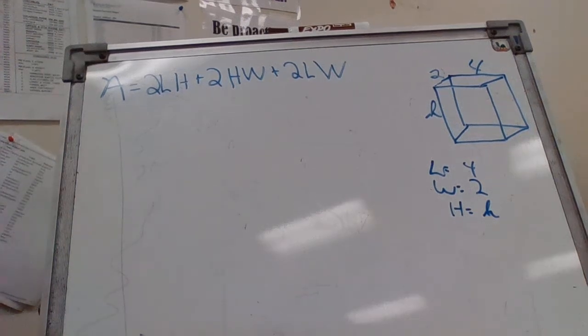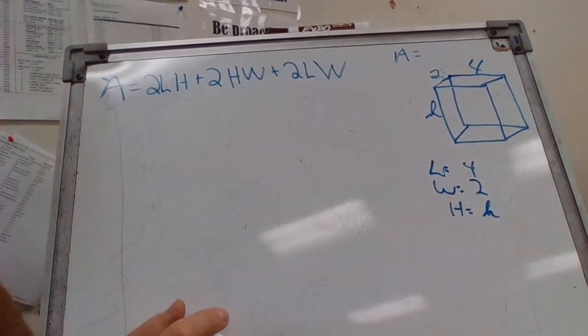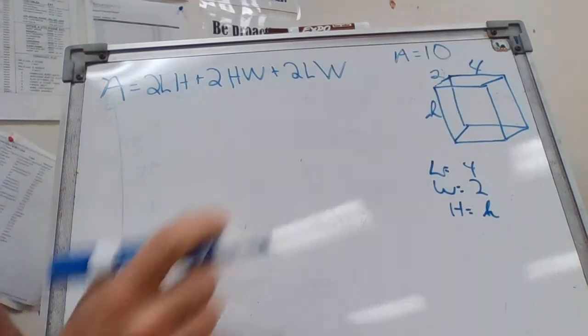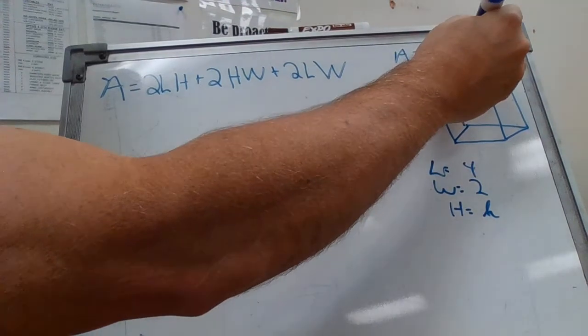Okay, so today we're talking about finding the surface area of a rectangular prism when you have the area. Let's go ahead and put up, let's say the area could be 10 hypothetically, 10 square centimeters.